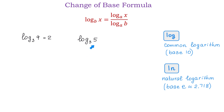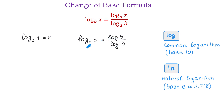To evaluate this logarithm we will use the change of base formula and either one of these two logarithms. For example, if we want to use the common logarithm then we will rewrite log base 3 of 5 as log of 5 over log of 3. Each of these logarithms has base 10 and we write 5 in the numerator and 3 in the denominator. Then we use the calculator and we get the approximate value of 1.46.